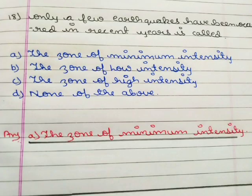Next question: the zone where only a few earthquakes have occurred in recent years is called option A the zone of minimum intensity, option B the zone of low intensity, option C the zone of high intensity, option D none of the above. The correct answer is option A the zone of minimum intensity.